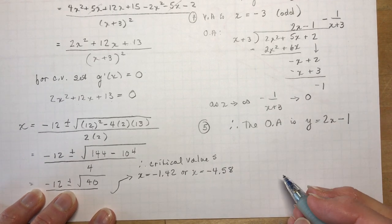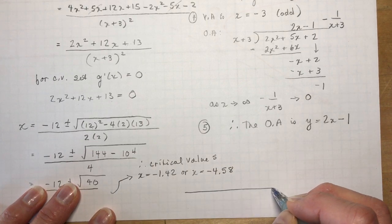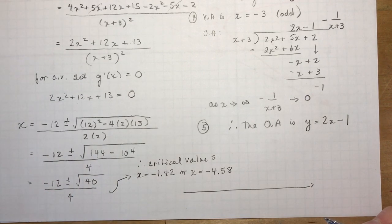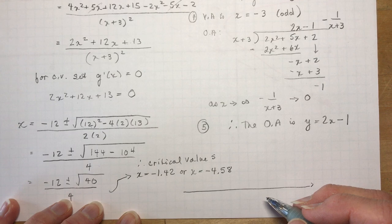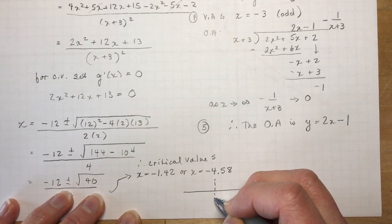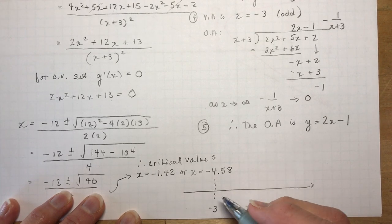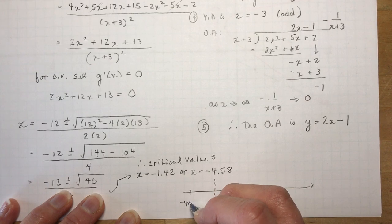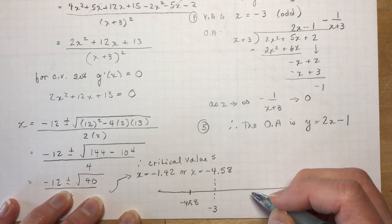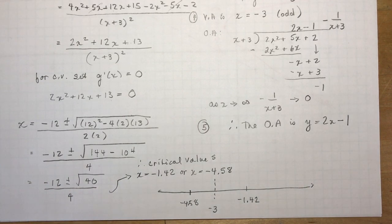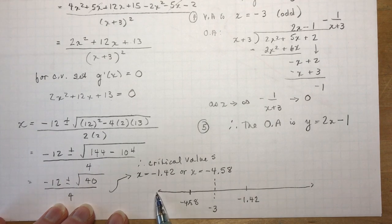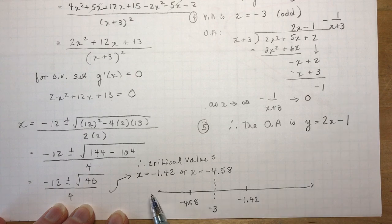I'm going to use a number line. Your teacher might want a table — that works too. The key points on the number line are x = −4.58, x = −3 (vertical asymptote), and x = −1.42. That creates four intervals to check in the first derivative: (−∞, −4.58), (−4.58, −3), (−3, −1.42), and (−1.42, +∞).